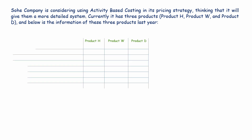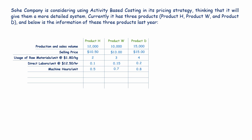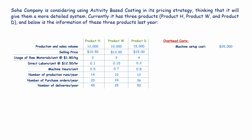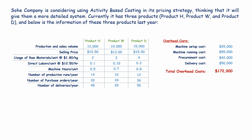The data includes production and sales volume, the selling price, usage of raw materials per unit at $1.80 per kilogram, direct labor hours per unit at $12.50 per hour, machine hours per unit, number of production runs per year, number of purchase orders per year, and number of deliveries per year. The overhead cost activities are machine setup costs, machine running costs, procurement costs, and delivery costs. We are required to calculate the cost per unit using the activity-based costing method.